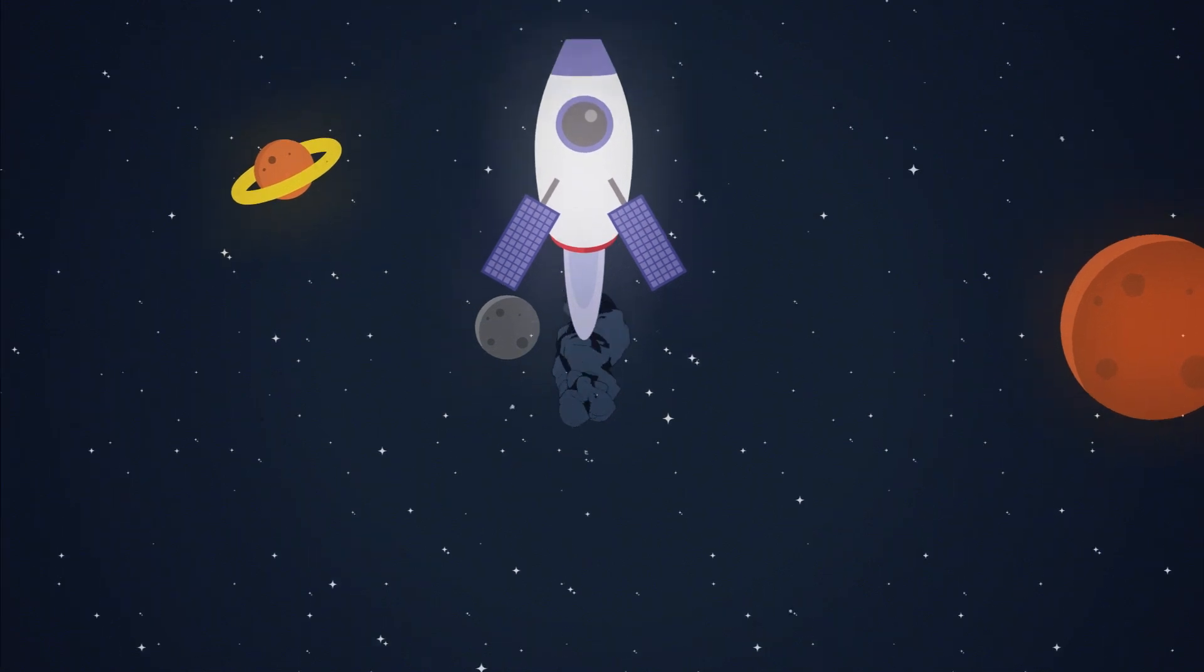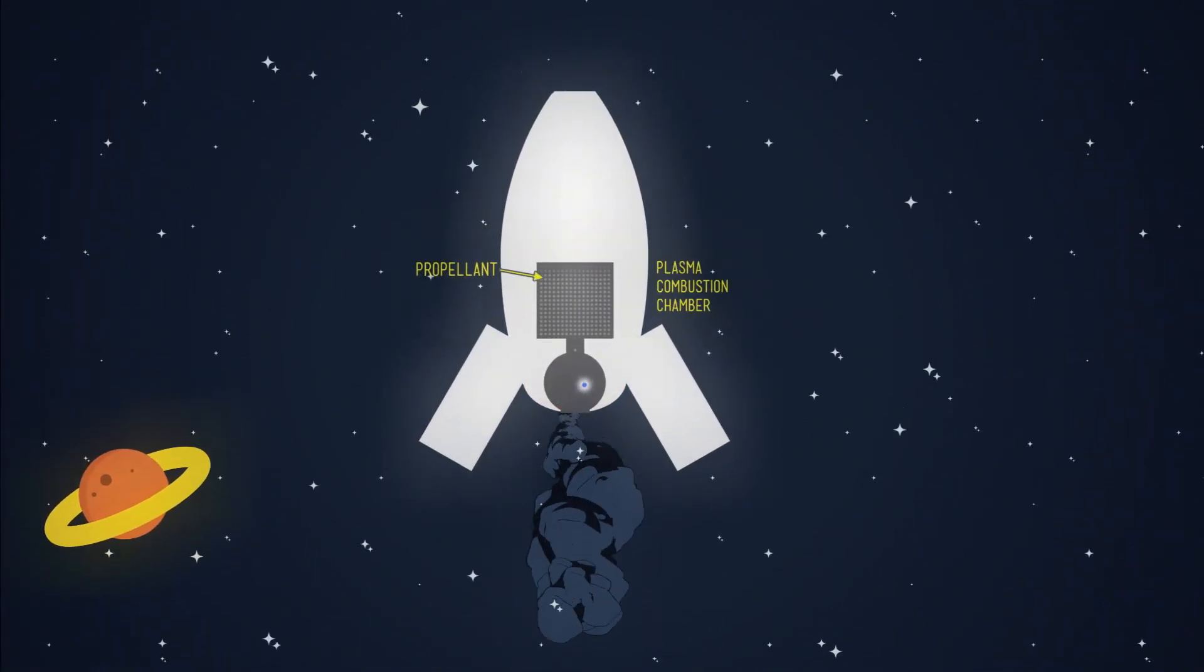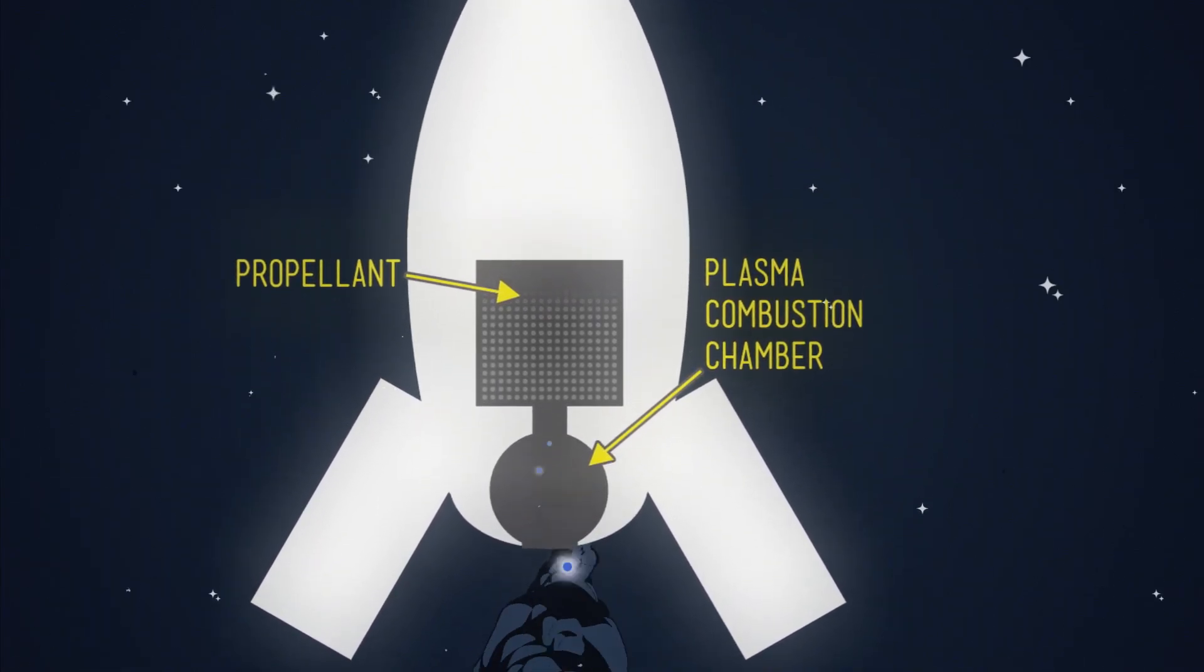A plasma rocket uses up its fuel very slowly, changing the gas fuel into blue plasma. But with the very fast speed of the plasma leaving the rocket, it is very efficient.